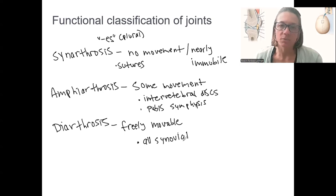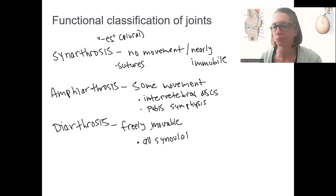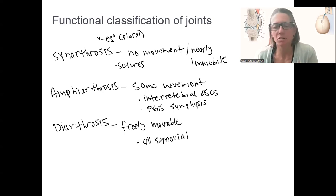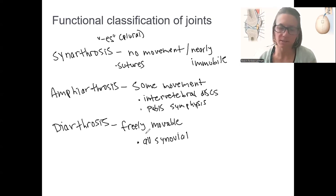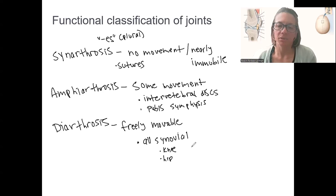All diarthroses are synovial joints. Synovial joints is the structural classification — the name refers to the fact that they have synovial fluid, which I'll talk more about in the next video. Diarthrosis refers specifically to the movement. But all synovial joints are diarthroses. These are all the joints you typically think of: knee, hip, elbow, shoulder.